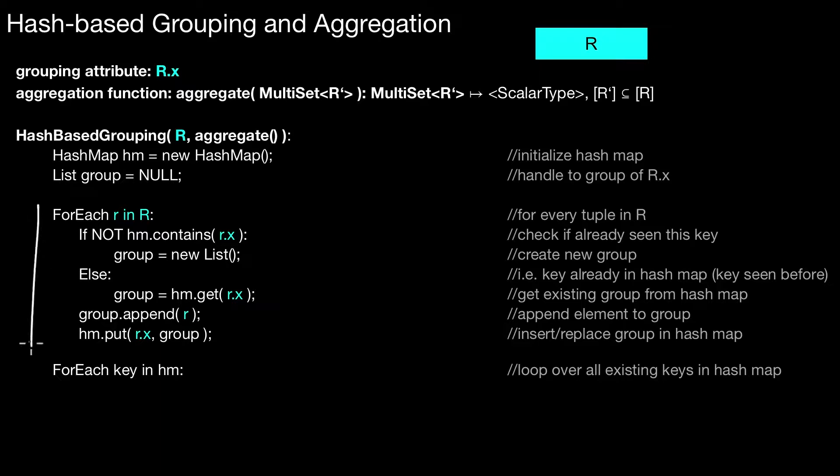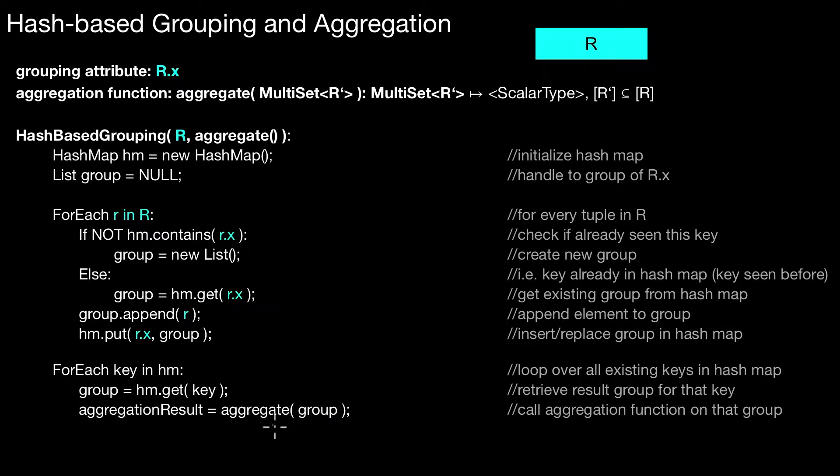Once you're done inserting each and every tuple of R into the hash-map, you basically inspect each existing group individually and call the aggregation function. For each existing key, each existing grouping key R.x, what we do is obtain that specific group and feed it into the aggregation function. The aggregation function takes this as the input and computes some aggregation result, which is then part of the output. All that needs to be done is then we output the key, which is the current grouping key R.x we're looking at, and the aggregation result we obtained for that. If you do this for each and every distinct grouping key you ever found in the first phase, output it, and once you're done with this loop, you're done grouping and aggregating the input.